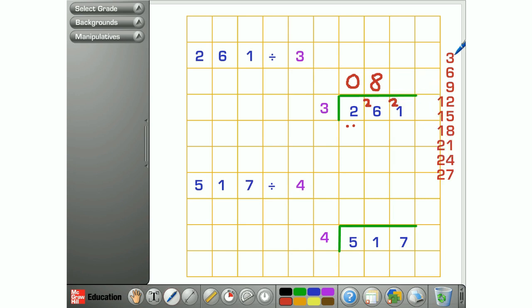And again, we do the same thing. 3, 6, 9, 12, 15, 18, 21. That's 7 times 3, and then we've got nothing left. So 261 divided by 3 is 87.